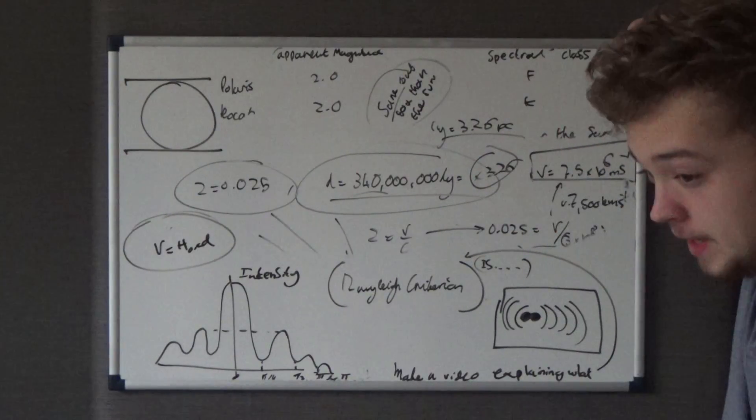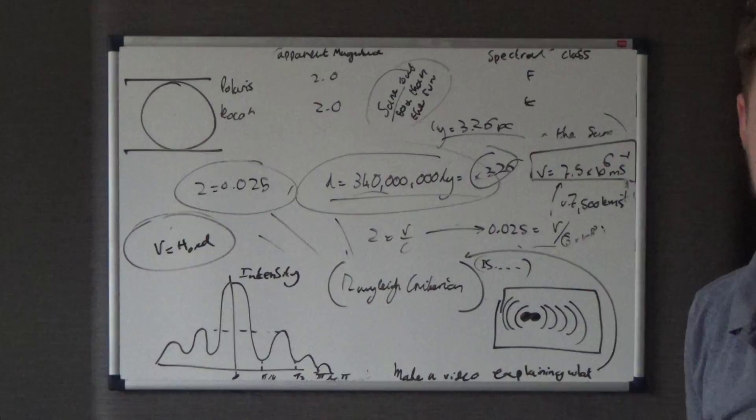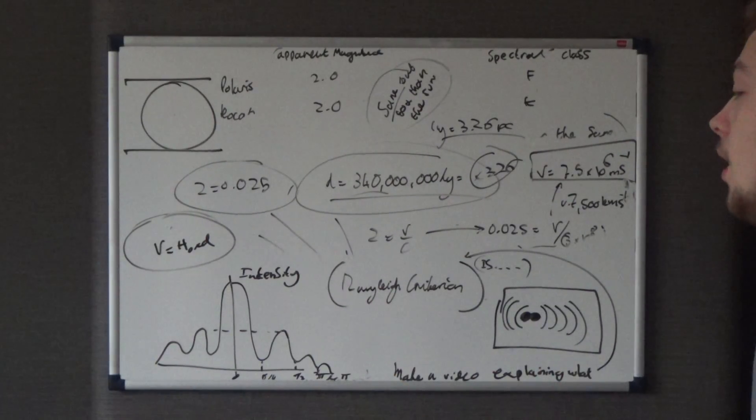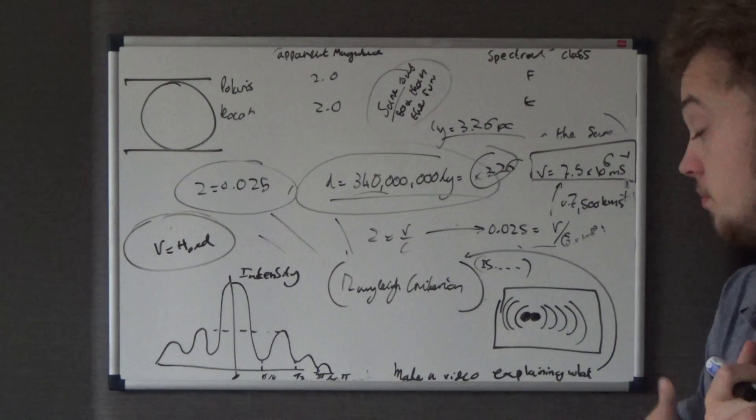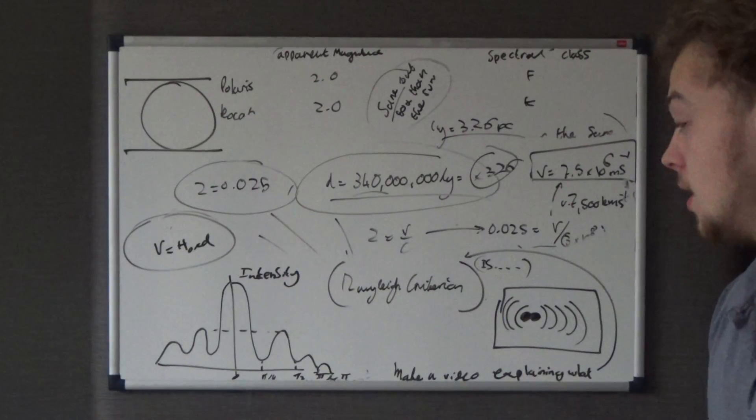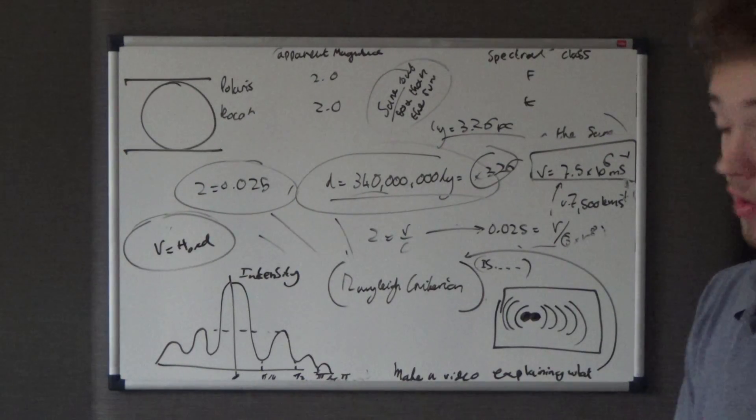So in essence what it says, I'll say word for word what it is and you can kind of understand why it's not very helpful, it says when the central maximum of one light source crosses over the central minimum of another.